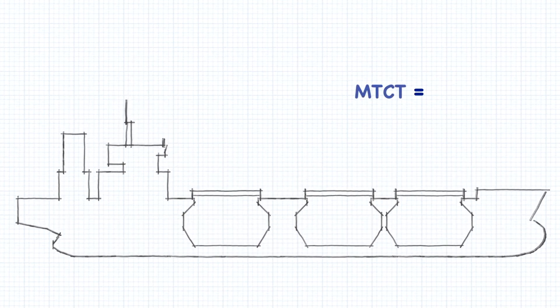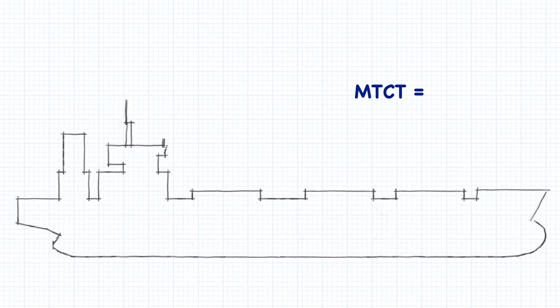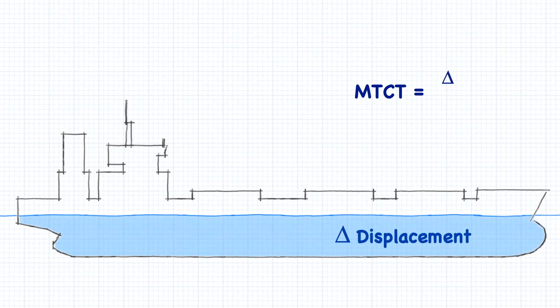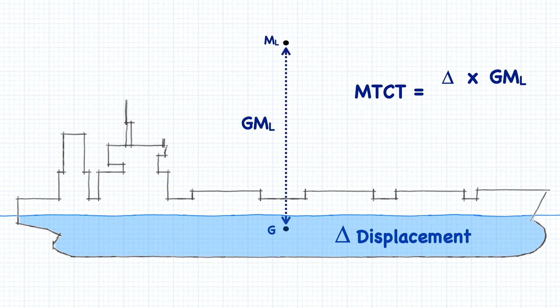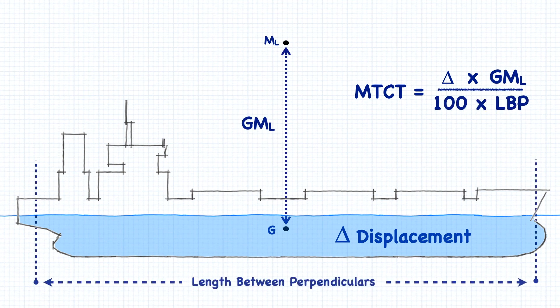You can get the moment to change trim from the stability manual, but you can also calculate the MTC for any ship using the following formula: it's the ship's displacement times the longitudinal metacentric height, divided by 100 times the length between perpendiculars.